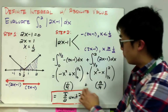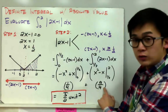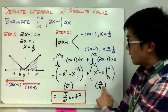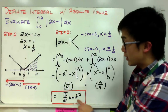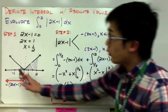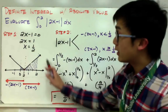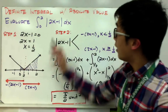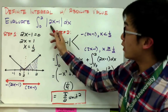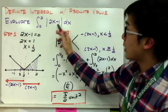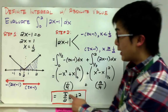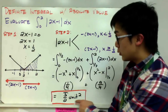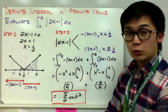Adding 1/4 plus 9/4 gives 5/2 unit squared. So the area under the curve of the absolute value function |2x minus 1| dx is 5/2 unit squared.